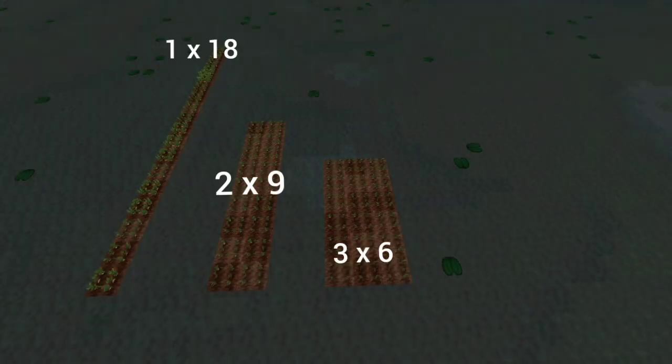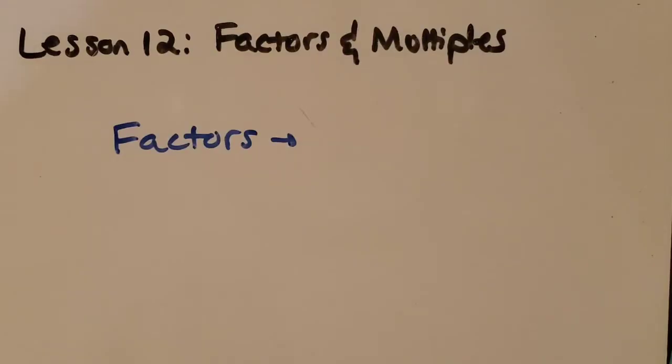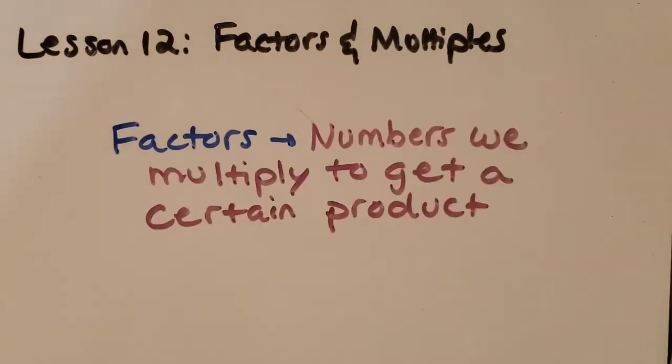All right, so here are all of the factors of eighteen. So back to our whiteboard. That means that factors are numbers we multiply to get a certain product. We showed an example of numbers we can multiply to get twelve. We also did an example of numbers we can multiply to get eighteen.